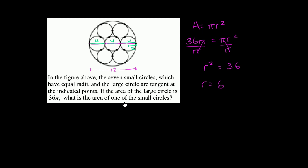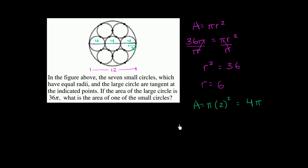So what is the area of one of the small circles? The area is going to be pi times its radius squared — pi times 2 squared — which is equal to pi times 4, or 4 pi. So the area of one of the small circles is 4 pi.